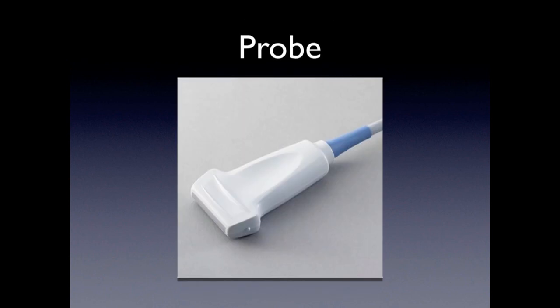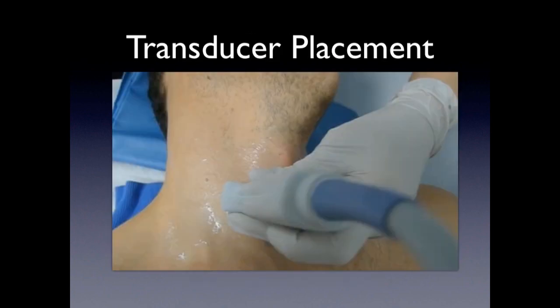We are going to be scanning with the vascular probe — it's a high frequency probe and it gives us great images. We're going to make sure we are in between the thyroid cartilage and the sternal notch, which is the area where the thyroid is located, and we're going to have the indicator probe pointed towards the right of the patient.